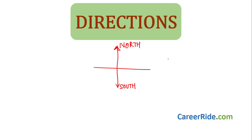Now, how to establish East and West. The right-hand side is always East and the left-hand side is West. How to remember? USA is a Western nation and USA is on our left side, so West is on the left side and East is on the right side — the opposite. These are the four main directions: North, South, East, and West.